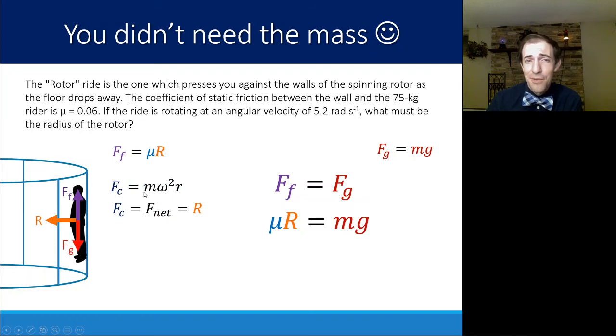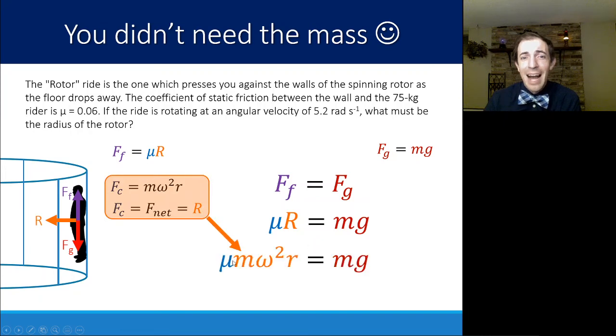We know also that the centripetal force is equal to mass times omega squared R. And that the centripetal force in this scenario is equal to capital R, the normal reaction force. So if I plug in this equation instead of R, because they're equal, I get mu times mass times omega squared times R equals mg. Notice that mass is on both sides, so that cancels out. And I'm left with mu omega squared R is equal to gravity. I know that gravity is 9.81 meters per second squared. I know that the omega is 5.2, and I know that mu is 0.06. It turns out I didn't need to know that the rider was 75 kilograms. Regardless of the rider's mass, I would still end up with the same answer, which kind of makes sense if you think about it. That you wouldn't need a different size ride for people of different mass. Otherwise, they wouldn't be able to enjoy the same ride together.